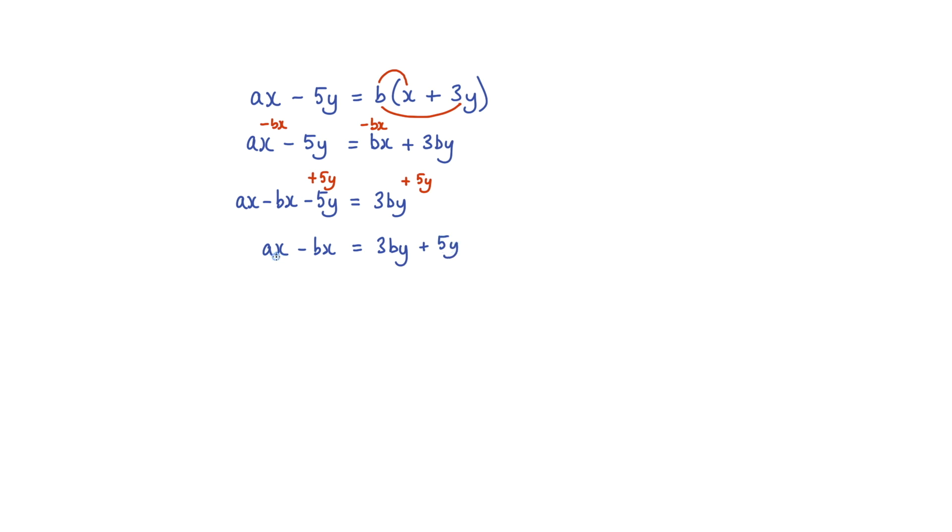Now I've got an ax here and a bx here. I can't add them, I can't subtract them. What I need to do is to factorize. The x here is in each of these terms, so we do have a common factor. I can bring the x outside a bracket here. x multiplied by a gives me the ax, minus x multiplied by b would give me the bx. And that is equal to 3by plus 5y.